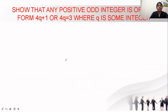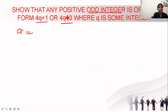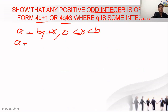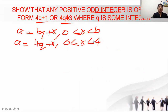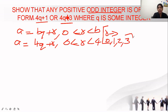The next question asks to show that any positive odd integer is of the form 4q plus 1 or 4q plus 3. Using Euclid's Division Lemma, a equals bq plus r where 0 ≤ r < b. Here b is given as 4, so a equals 4q plus r, where 0 ≤ r < 4. The possible remainder values are therefore 0, 1, 2, and 3 only.